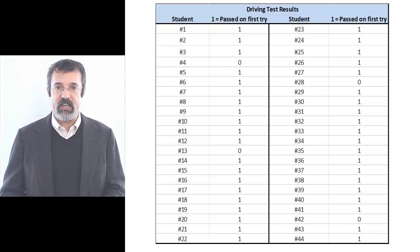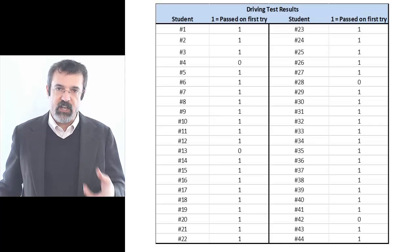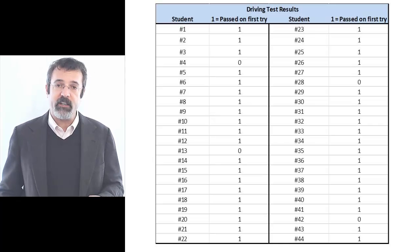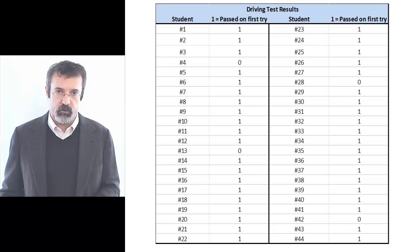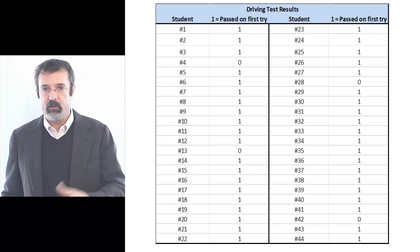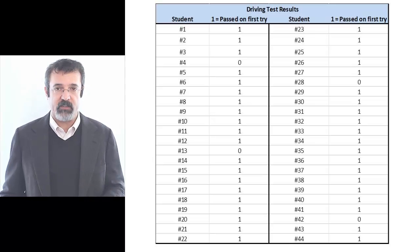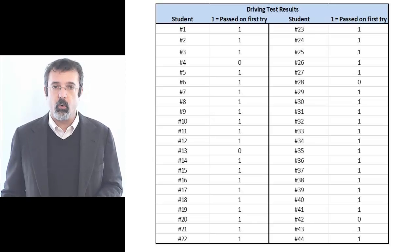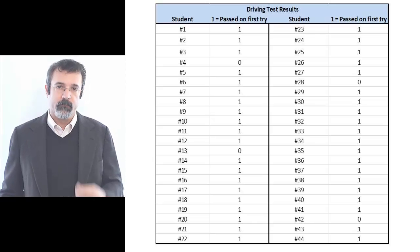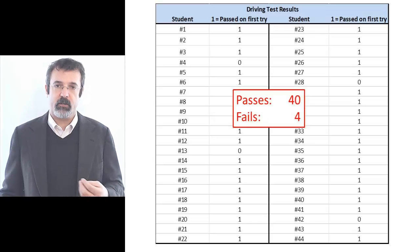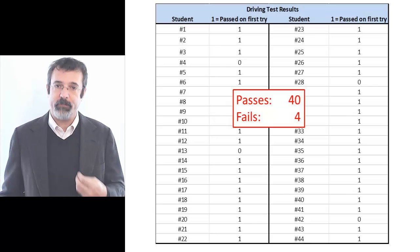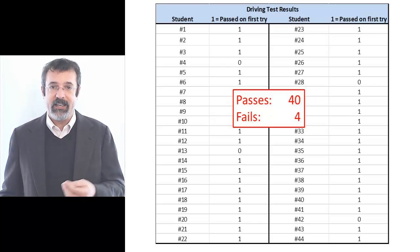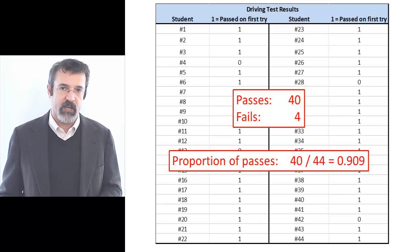We then collect data on a number of students. In this dataset, a 1 indicates that the student passed the driver's test on the first try, and a 0 indicates that the student did not pass the driver's test on the first try. Out of these 44 students, 40 passed their test on the first try.